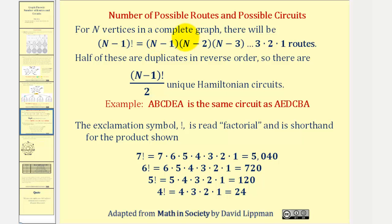So if we have n vertices in a complete graph, there will be n minus one factorial routes. But when forming circuits, half of these are duplicates in reverse order. So there will be n minus one factorial divided by two unique Hamiltonian circuits.